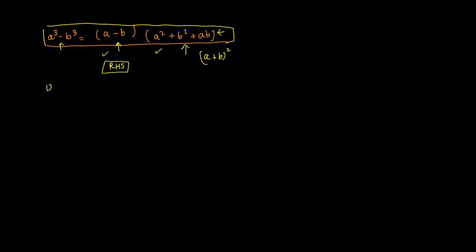So let's say you are asked to solve (5a - 3b)(25a² + 9b² + 15ab). Now when you compare this, what do you get?